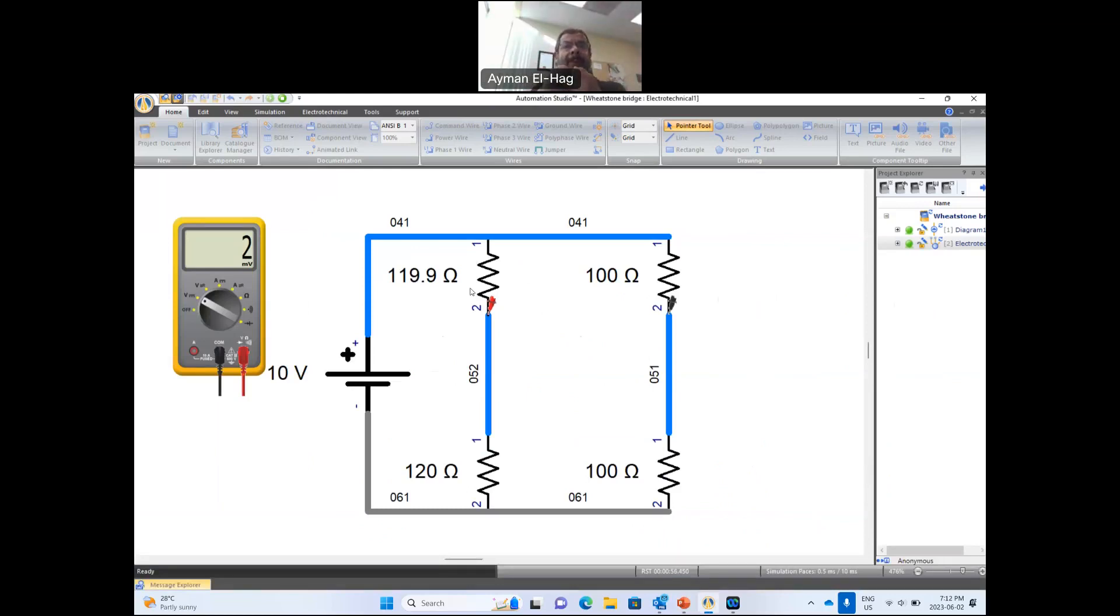Now, if you apply a tensile force on the strain gauge, this resistance will increase, but it will not increase to a very high value, to a small value like about 0.1 ohm. If you apply a compression force, then you will have a small reduction in the resistance. Now, that change in the resistance due to the force is reflected as a change in the voltage.